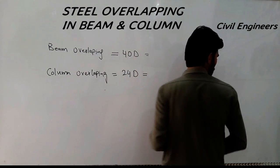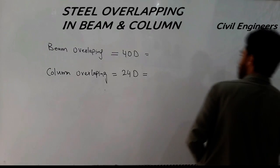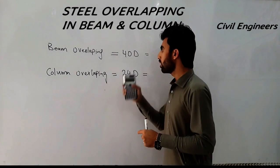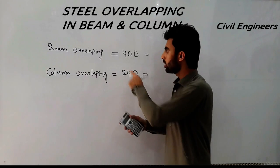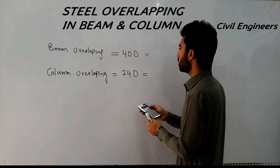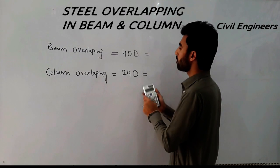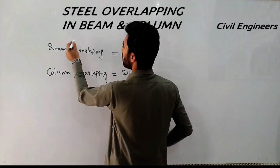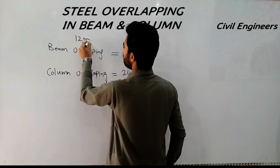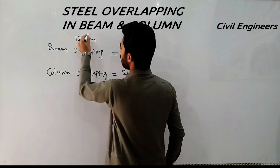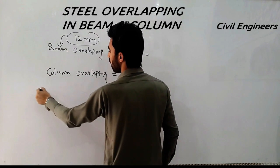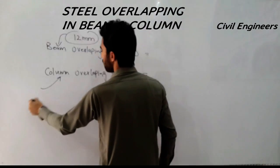For column overlapping, it is 24d. So the length by which one bar overlaps the other will be calculated using this formula. I will work out an example now.